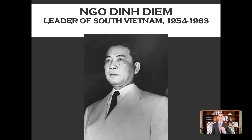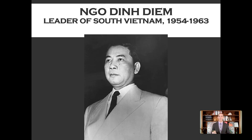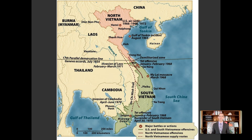Diem gave himself 98.2% of the vote. Even the US CIA was like: if you're going to cheat on an election, make it somewhat reasonable. Absolutely no one believed it; everyone recognized it was a fraudulent election. He now set himself up as ruler of the new Republic of Vietnam, which is what South Vietnam became.